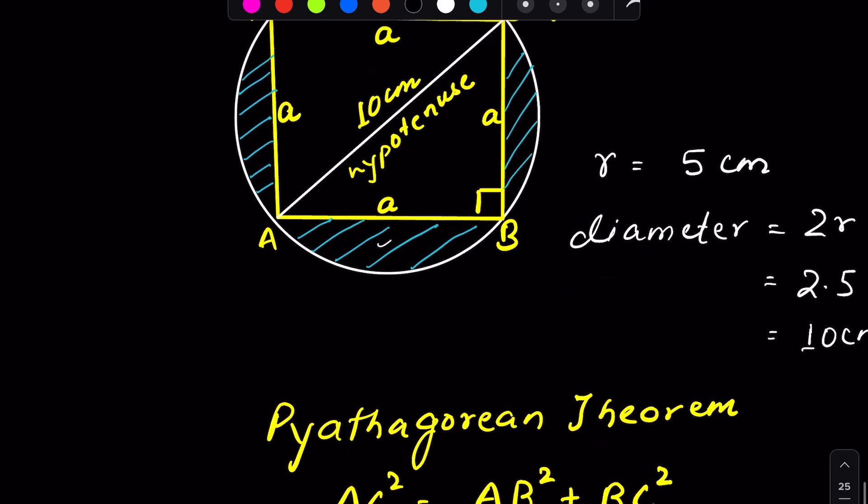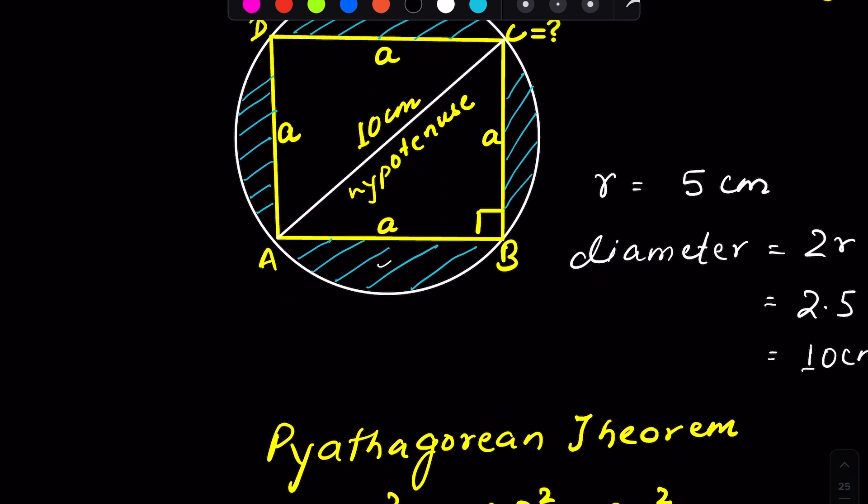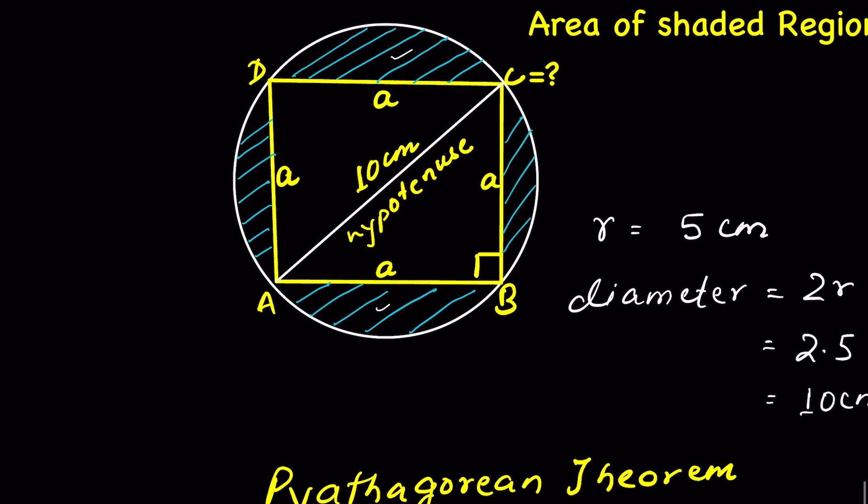Next, it's asking, we have to find area of this shaded region. How can we find the area of this shaded region? Now, this square has taken the area of the circle, occupied the space of 50 cm square. So if we find the area of the circle and then subtract this area of the square, then we can find the area of the shaded region.